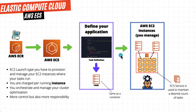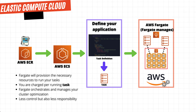But what if you don't want to manage the EC2 instances? Well, we have AWS Fargate. Fargate will help you launch your Docker containers, and it will also provision the necessary resources for your images to run. This is easier because it takes care of the tasks and the EC2 instances needed for your workload.